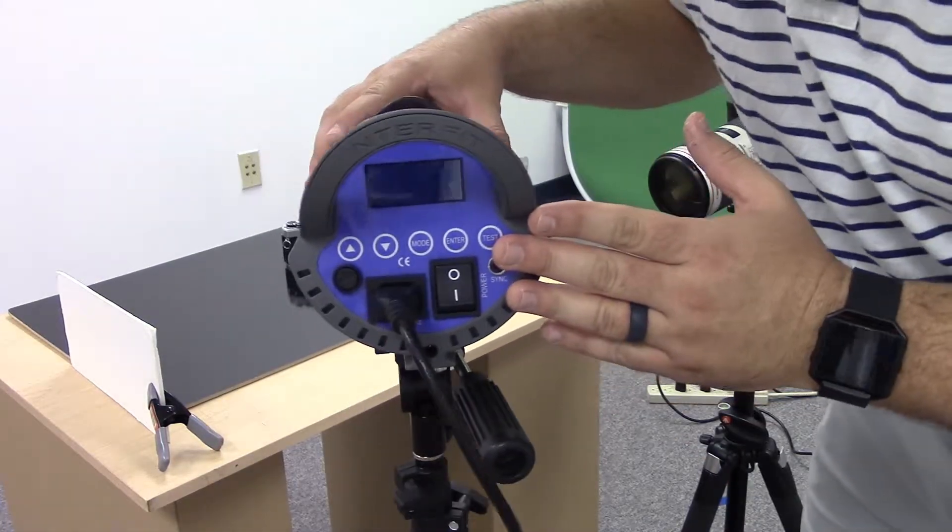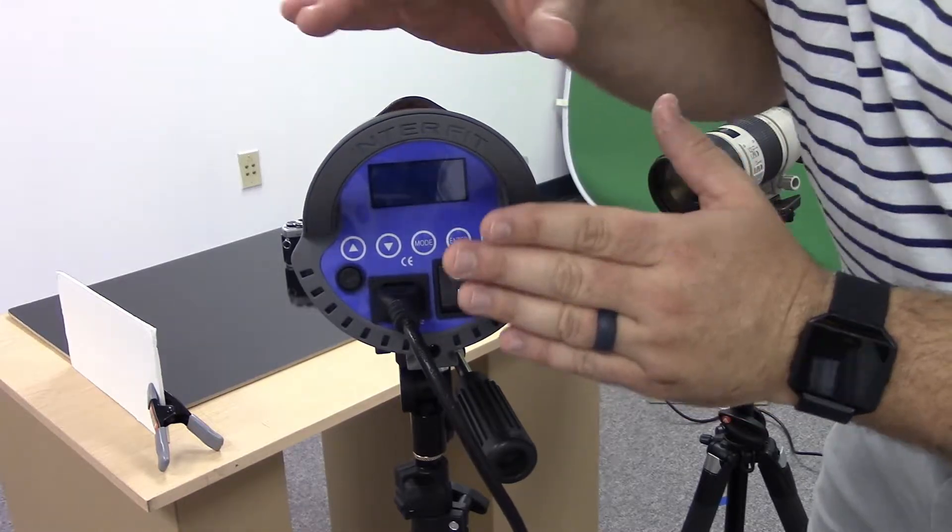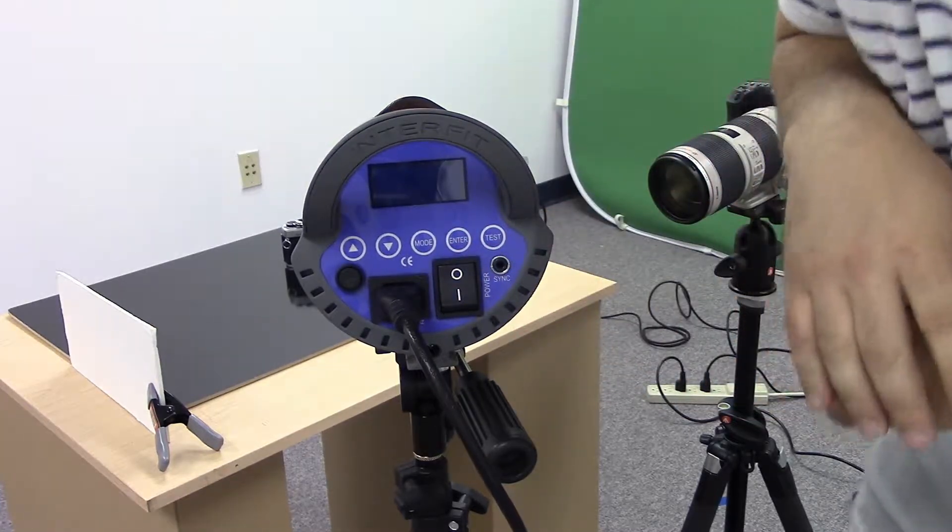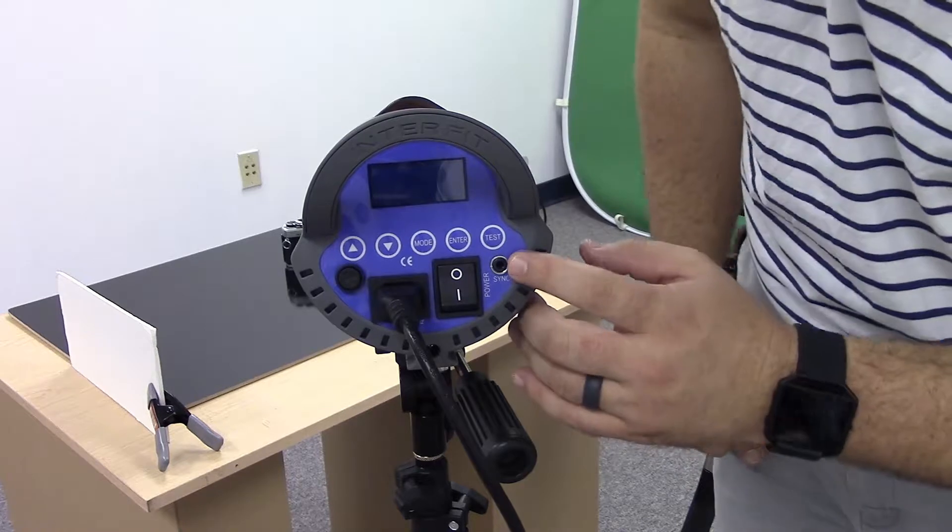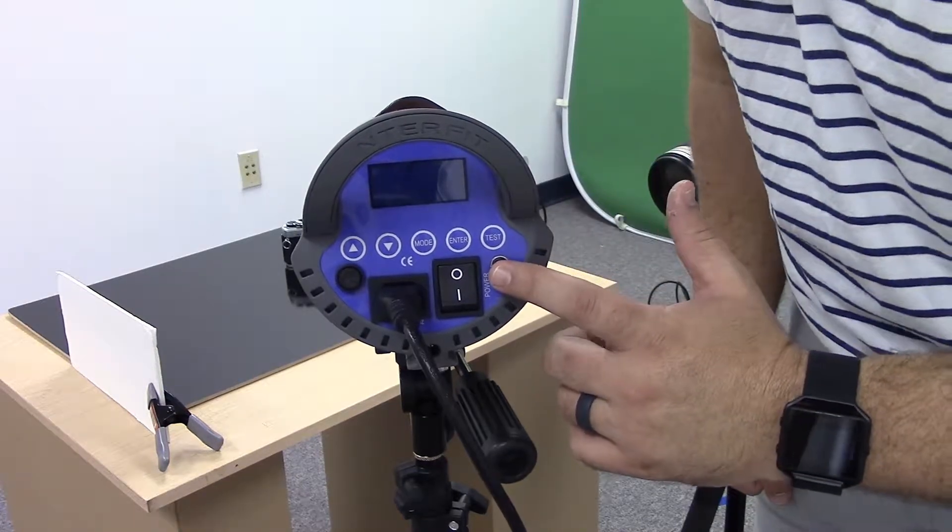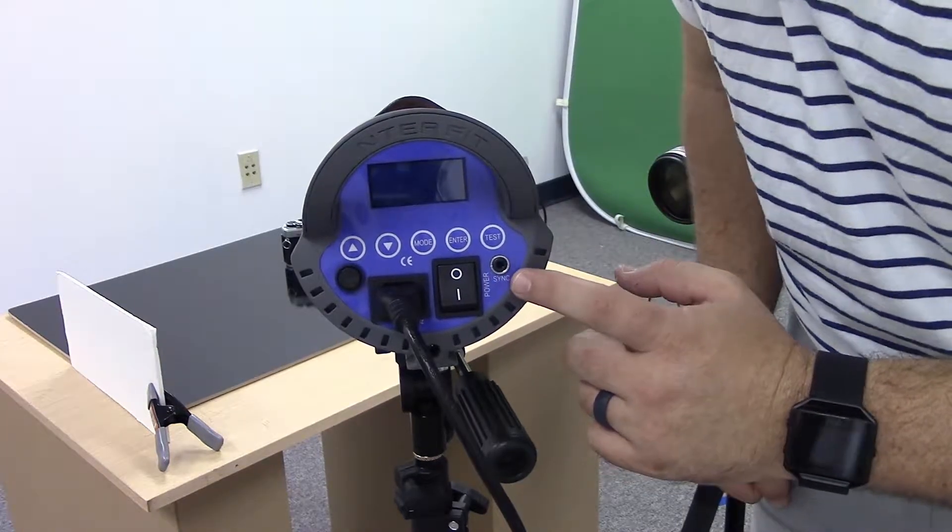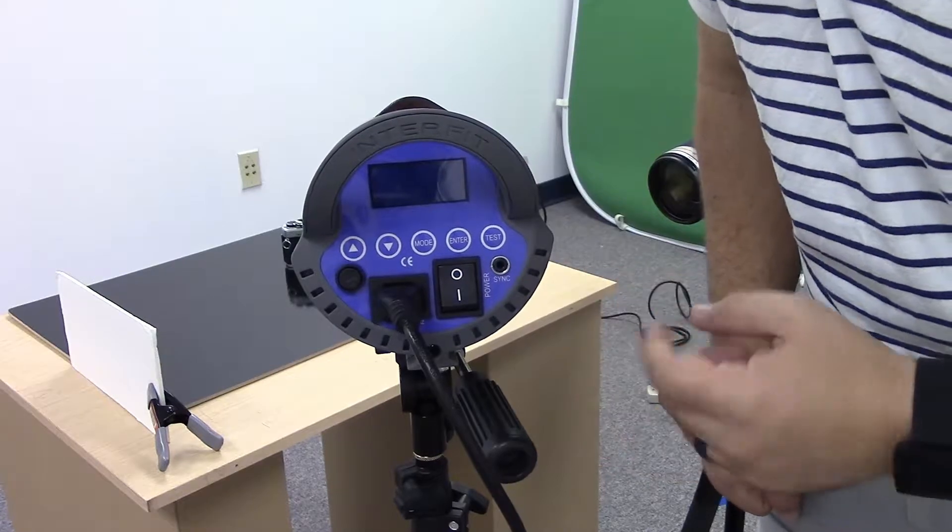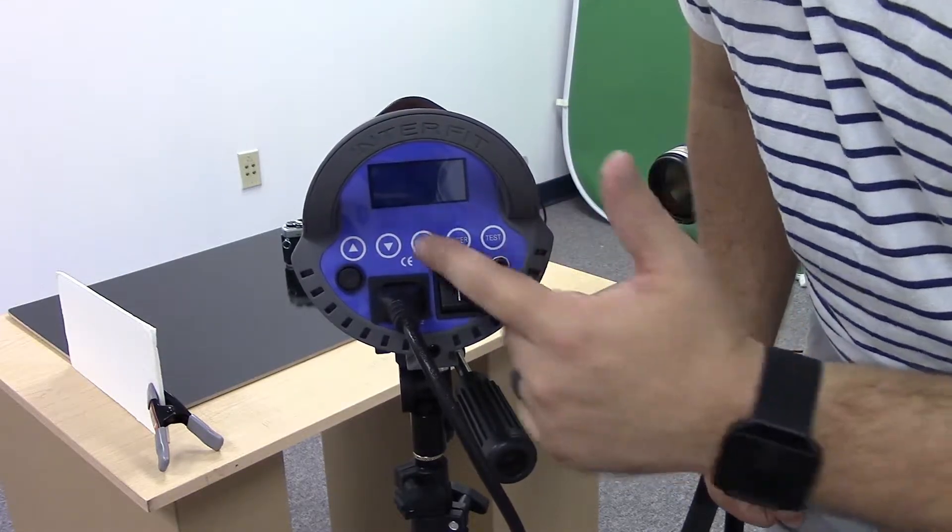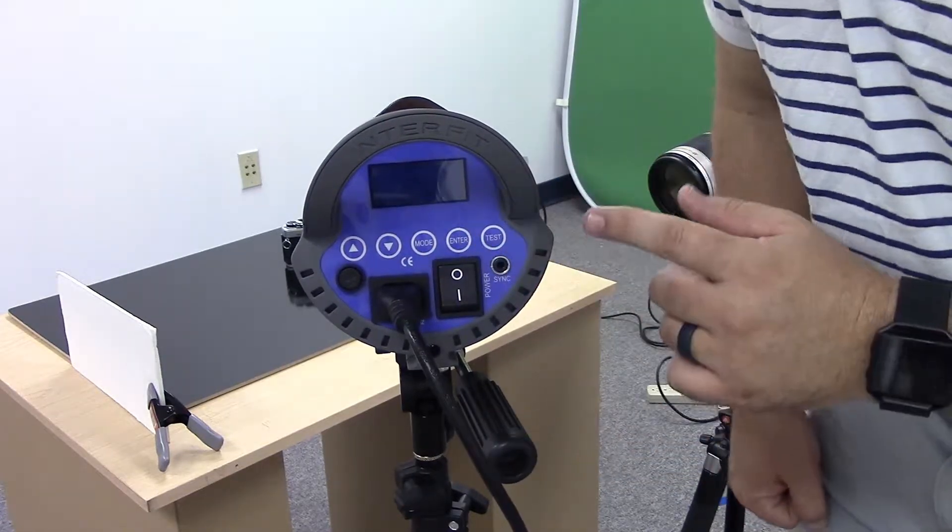This back here are the controls for the light, power. We've got our sync connection, this is where we will put our triggering system and I'll get into that in just a few minutes. Then all the different buttons that help you go through the modes and we'll look at the modes in a minute.